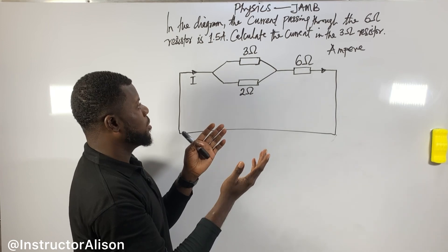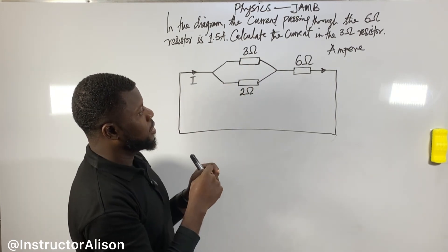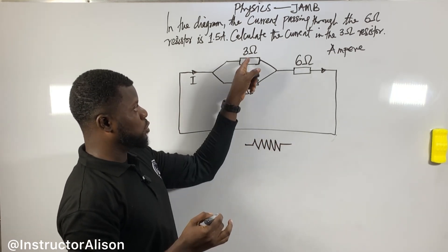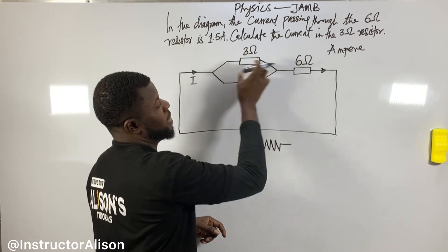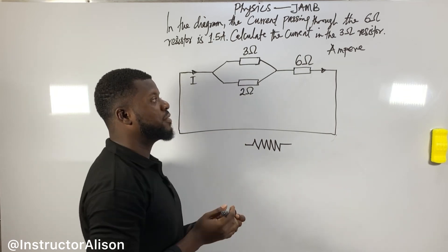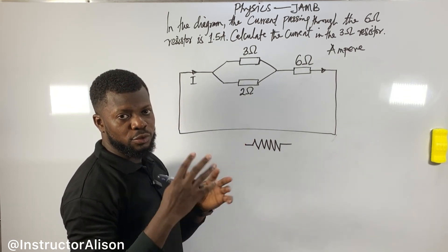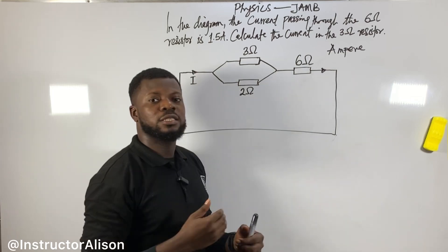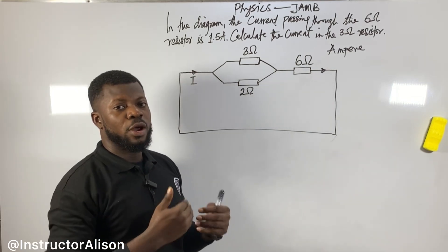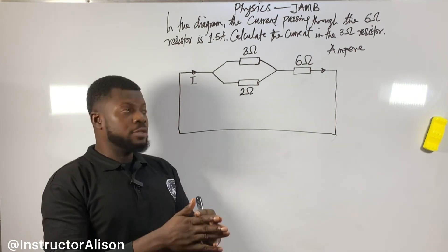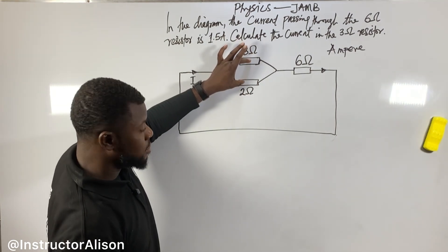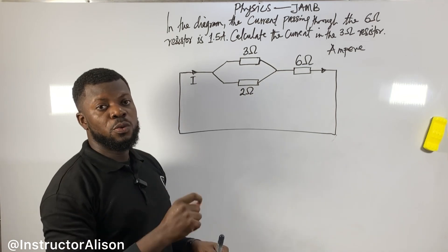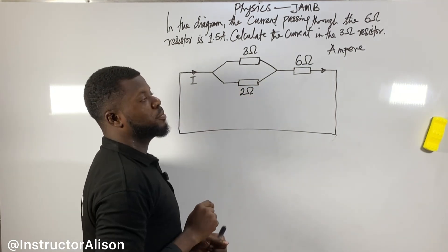First, analyze the circuit. This circuit has two resistors. The resistor symbol is as shown in the diagram. Now, this question involves resistors connected in series and also in parallel. These two resistors — the three ohm and the two ohm — are connected in parallel. We need to resolve this parallel combination first before we can get the final answer.